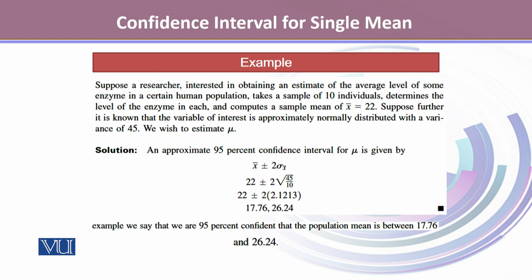The variable of interest is approximately normally distributed with known variance of 45. We wish to compute the interval estimate for the population mean μ.